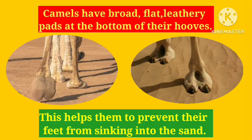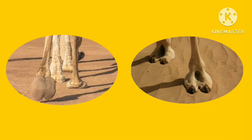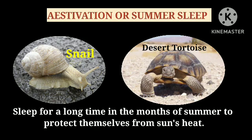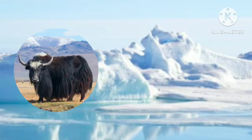Camels also have broad, flat, leathery pads at the bottom of their hooves. This helps them to prevent their feet from sinking into the sand. Some animals like snails and desert tortoise sleep for a long time in the months of summer to protect themselves from the sun's heat. This is called summer sleep or estivation.